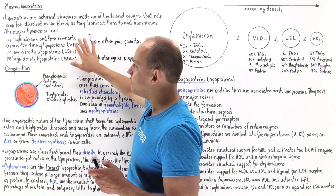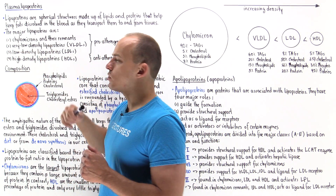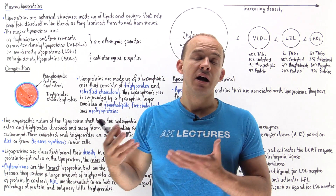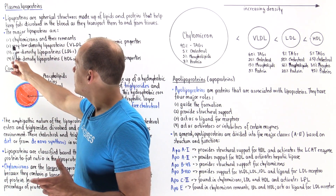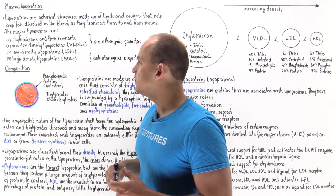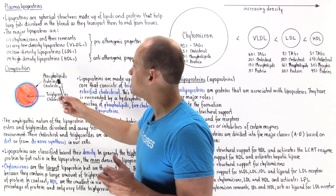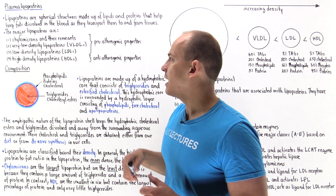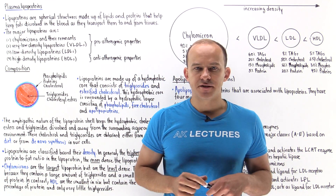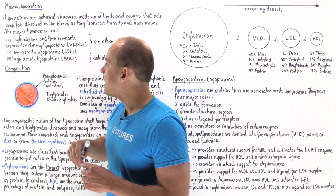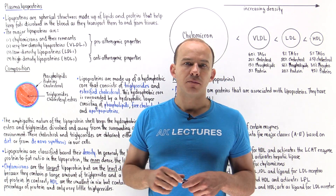The major types of lipoproteins you need to be familiar with include chylomicrons and chylomicron remnants, which are part of the exogenous transport pathway. Then we have very low-density lipoproteins (VLDLs), intermediate-density lipoproteins (IDLs), and low-density lipoproteins (LDLs), which are collectively part of the endogenous transport pathway. And then we have high-density lipoproteins (HDLs), which are part of the reverse cholesterol pathway.